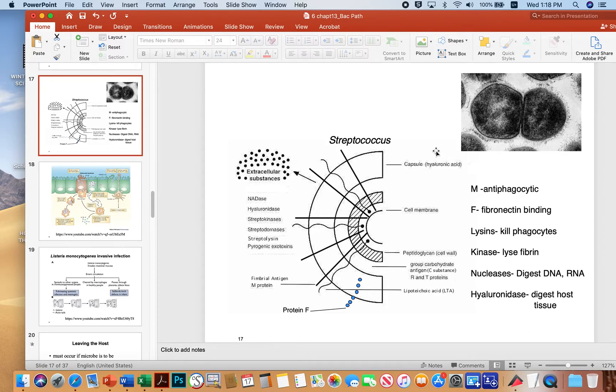It's got some structural features. It has a capsule, and there's the big capsule. It has a variety of fibril antigens, including something called M-protein, which allows it to be antiphagocytic.